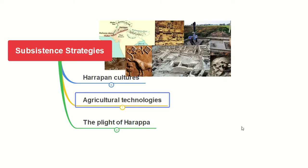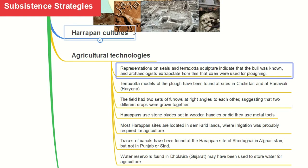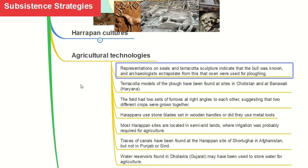Welcome to this section on agricultural technologies used in Harappan society. Representations on seals and terracotta sculptures indicate that the bull was known, and archaeologists extrapolate from this that oxen were used for ploughing. This is the first evidence — a terracotta sculpture showing that the Harappan people were aware of and used the bull and oxen in their agricultural practice.